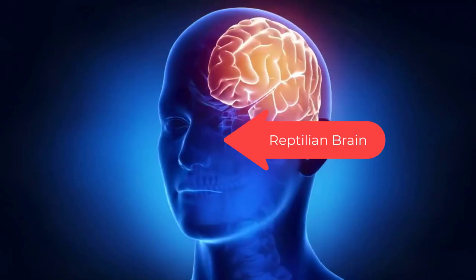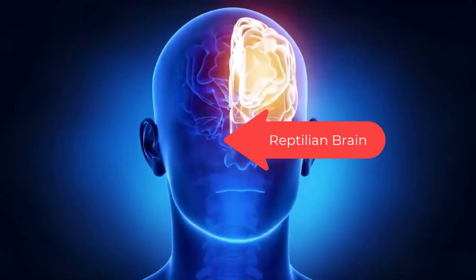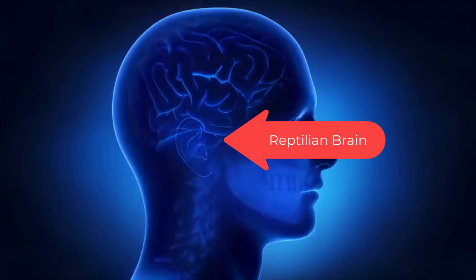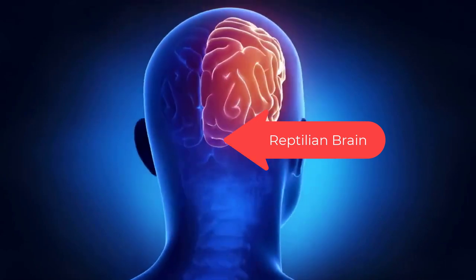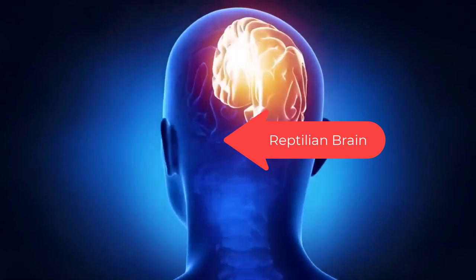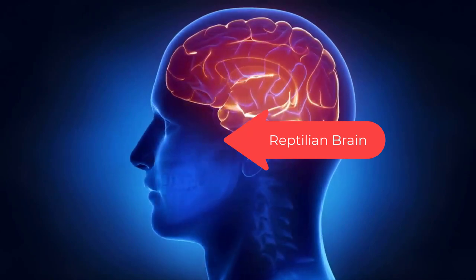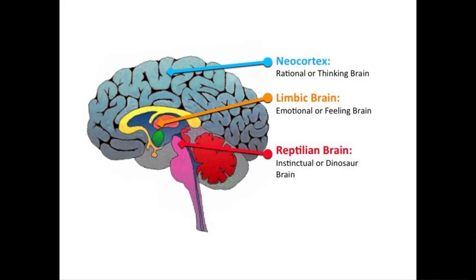The old brain — the reptilian brain — it decides. It can take input from the other brains, but it can also make a decision faster than the blink of an eye, then use the other brains to justify the decision. The reptilian brain is visual and hardwired into the brain stem.